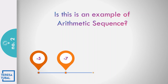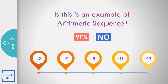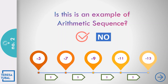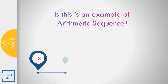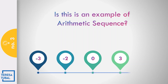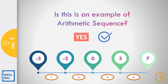Question number 2: In the sequence negative 5, negative 7, negative 9, negative 11, and negative 30, do you think this is an arithmetic sequence? No, because the common difference is not constant. Question number 3: Is negative 3, negative 2, 0, 3, and 7 an example of the arithmetic sequence? No, because the difference is not common from the first up to the last term.